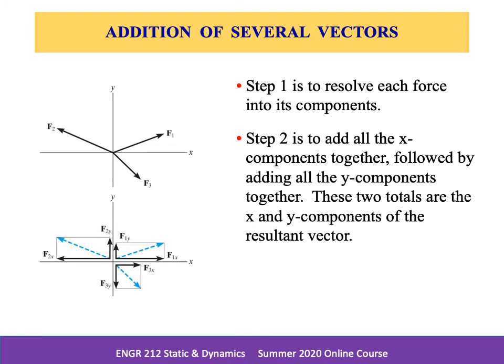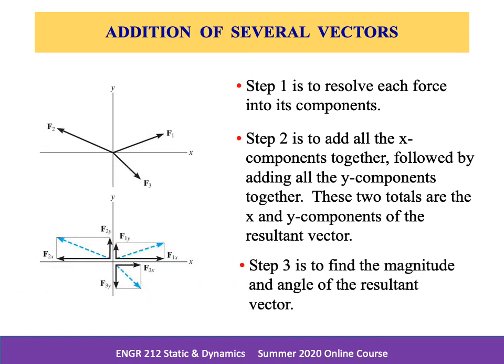Step two: we simply add all the x-components together and add all the y-components together. The two totals are then the x and y components of the resultant vector. Once we have defined those components, we simply find the magnitude and the angle of the final resultant vector from the information from its component parts.